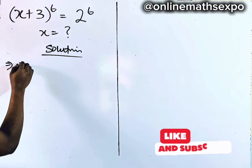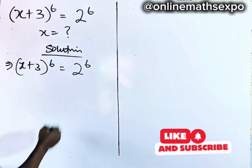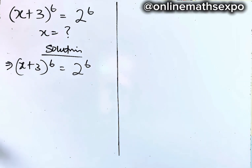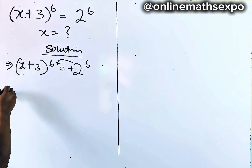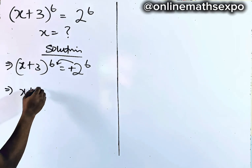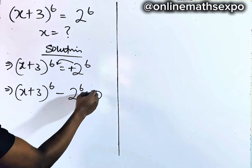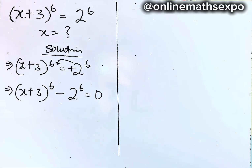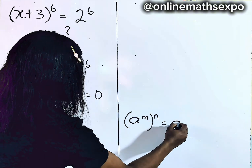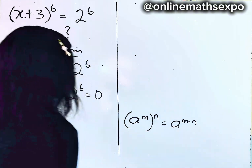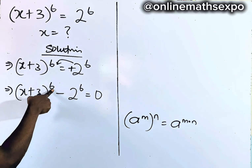We have (x + 3) to the 6th power is equal to 2 to the 6th power. Now we can take the right side to the left: (x + 3)^6 minus 2^6 is equal to 0. Remember that for every a^m raised to power n, it is a^(m×n). So this power of 6 we can rewrite.